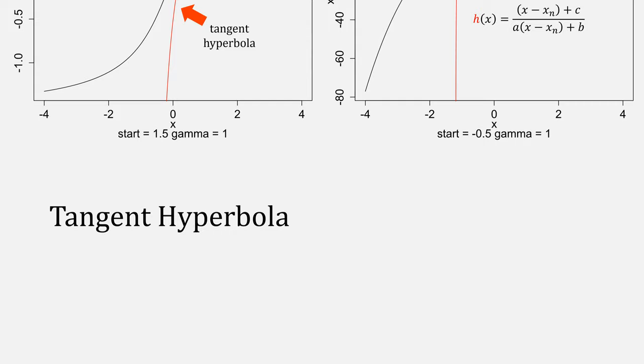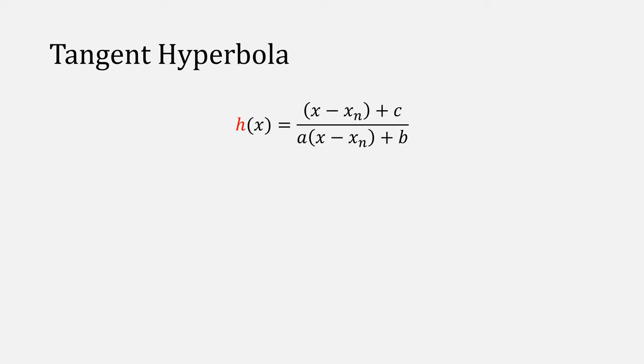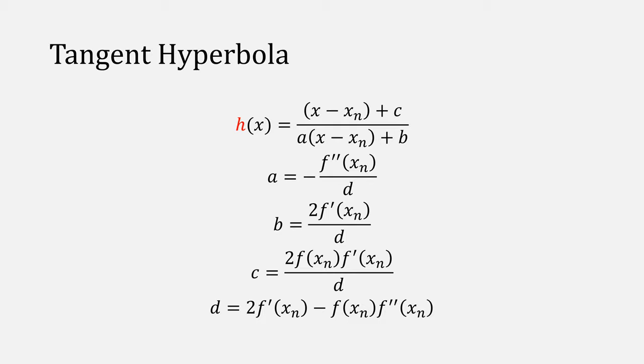Our equation for the tangent hyperbola is given by this function. This equation is designed to go through our point at xₙ and to also be tangent, using the variables a, b, and c. We also have a helper variable d, which looks like this. From this equation, we can actually derive Halley's method.